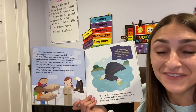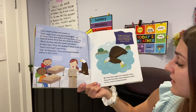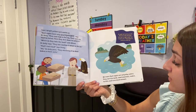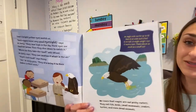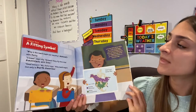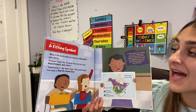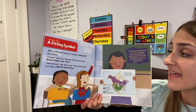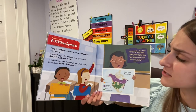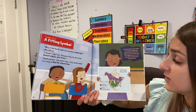Bald eagles have very good eyesight, says Dr. Kelly. Did you know that bald eagles have really good eyesight? We learn that eagles are not picky eaters. They eat fish, birds, small mammals, snakes, turtles, and even dead animals. Why is the bald eagle our country's mascot, asks Harry. I know, says Lily — because they fly free, and Americans are free. Good answer, says Ms. Patel. Also, bald eagles live only in North America.